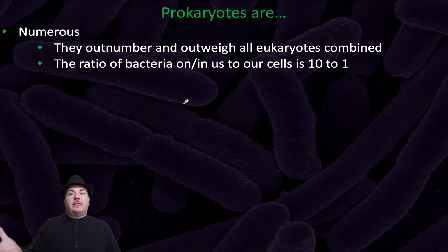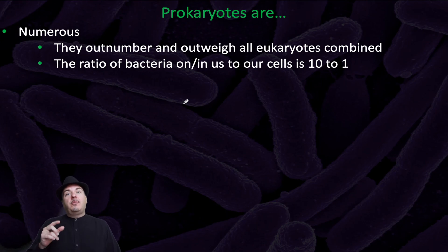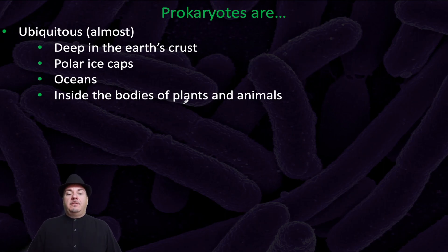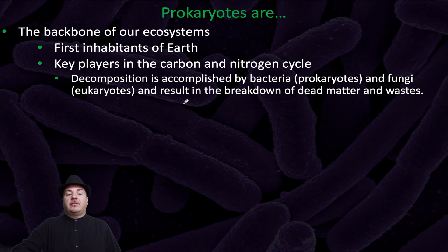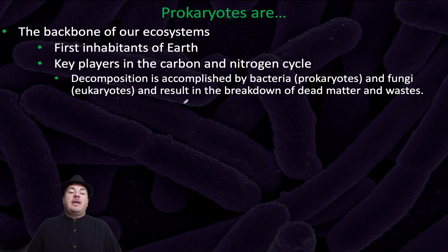By weight you're more human than bacteria, because eukaryotic cells are much larger than prokaryotic cells, but by number you are more bacteria than human. Prokaryotes are ubiquitous — you find them basically everywhere: deep in the Earth's crust, in the polar ice caps, in the oceans, and inside the bodies of plants and animals. Prokaryotes are the backbone of our ecosystems. They were the first living inhabitants of planet Earth and are key players in the carbon and nitrogen cycle. For example, the decomposition of living organisms is accomplished by bacteria and fungi, resulting in the breakdown of dead matter so nutrients can be reused.